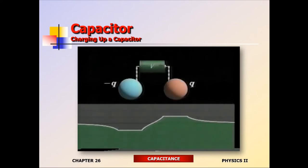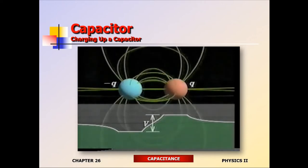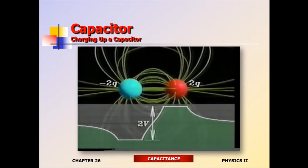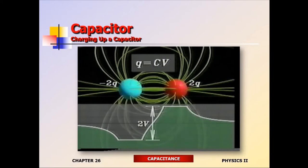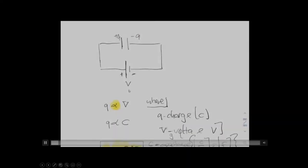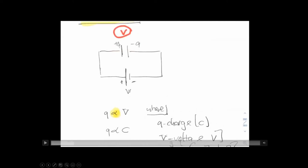When a battery is connected between two pieces of metal, it forces charge to flow until the potential difference between them equals the voltage of the battery. That creates an electric field between them. If the voltage is doubled, so is the charge, the potential difference, and the electric field. The charge transferred is proportional to the voltage applied, and the constant of proportionality C is called the capacitance.